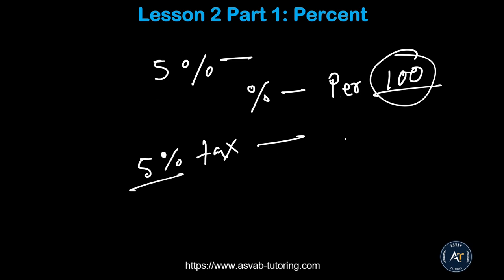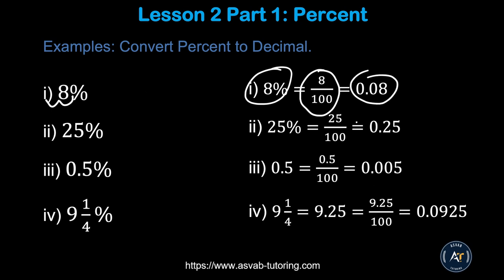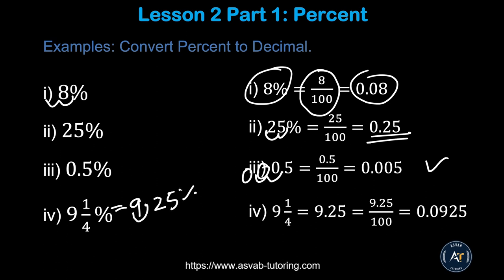Now let's learn how to convert from percent to decimal. You divide by 100, or equivalently, move the decimal point two places to the left. For example, 8% equals 8/100 = 0.08. Move two decimal places: one, two — gives you 0.08. For 25%, move two places to get 0.25. For 0.5%, move two places and fill with zero to get 0.005. For nine and a quarter percent (9.25%), move two places to get 0.0925.